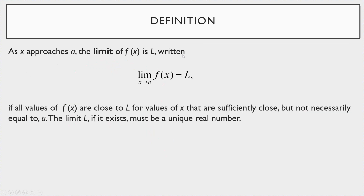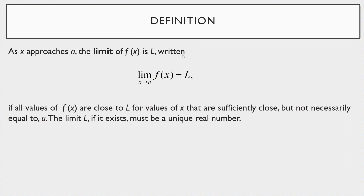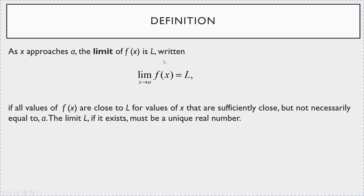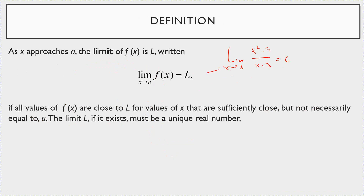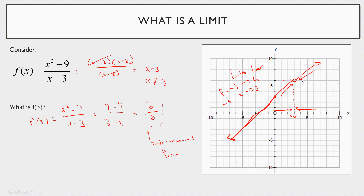Let me give you a formal definition. A limit, as x approaches some value a — here x is approaching 3 — the limit of f of x is equal to some number L. It's written as: the limit as x goes to a of our function. Looking here, the limit as x goes to 3 of x squared minus 9 over x minus 3 is equal to 6. If all values of f of x are close to L for values of x sufficiently close but not necessarily equal to a, the limit L, if it exists, must be a unique real number. As you get closer and closer to x equals 3 from both sides, the graph gets really close to 6.